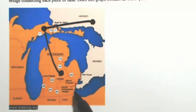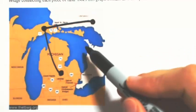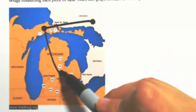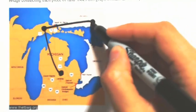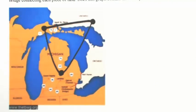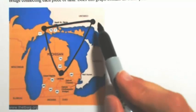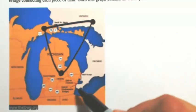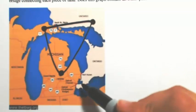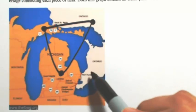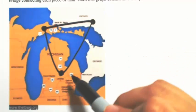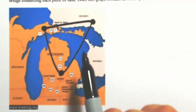We have the Ambassador Bridge that connects the Lower Peninsula to Canada. Now I'm going to connect these together. Understand that I'm not saying that this bridge is over this part of the body of water. I'm just saying that with this edge, there is a connection between the Lower Peninsula and Ontario. In addition to that bridge, we also have the Blue Water Bridge that connects from Port Huron into Ontario. So there is another bridge connecting the Lower Peninsula to Ontario.